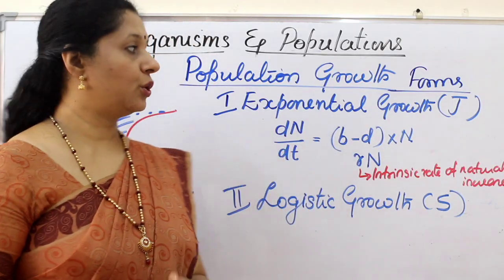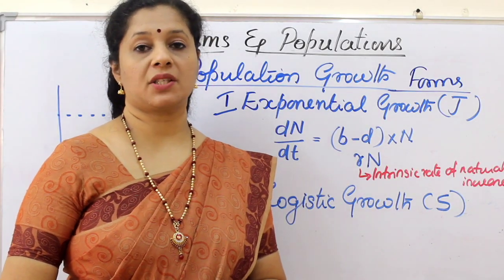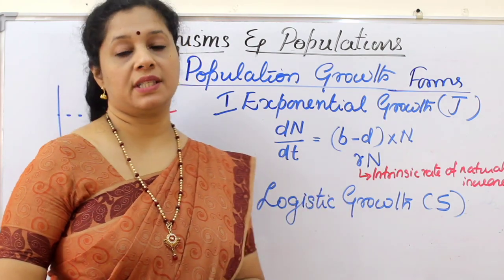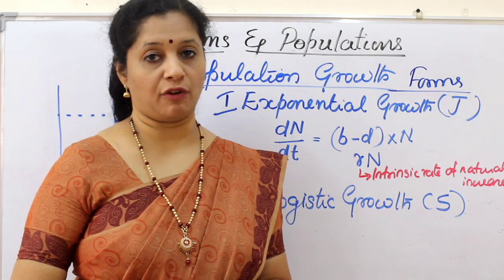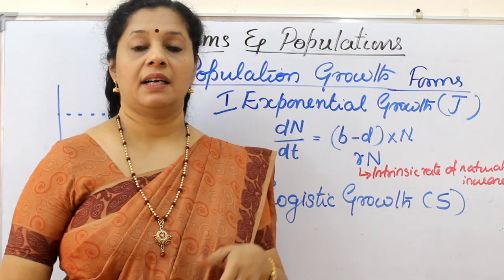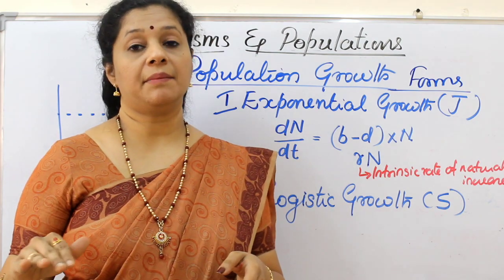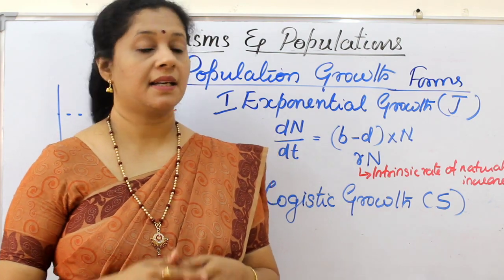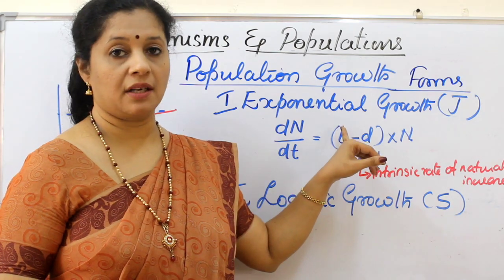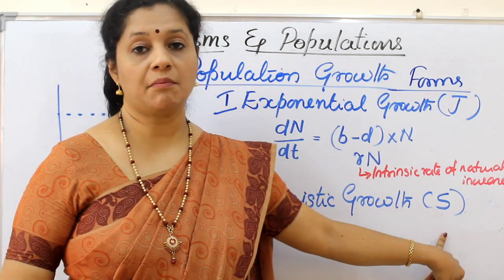Now let us discuss two types of growth forms. The first type is called exponential growth form and the second is called logistic growth form. When we plot population density on the y-axis and time on the x-axis, we get a J-shaped curve if the population growth is exponential, whereas if it is logistic we get a sigmoidal curve.